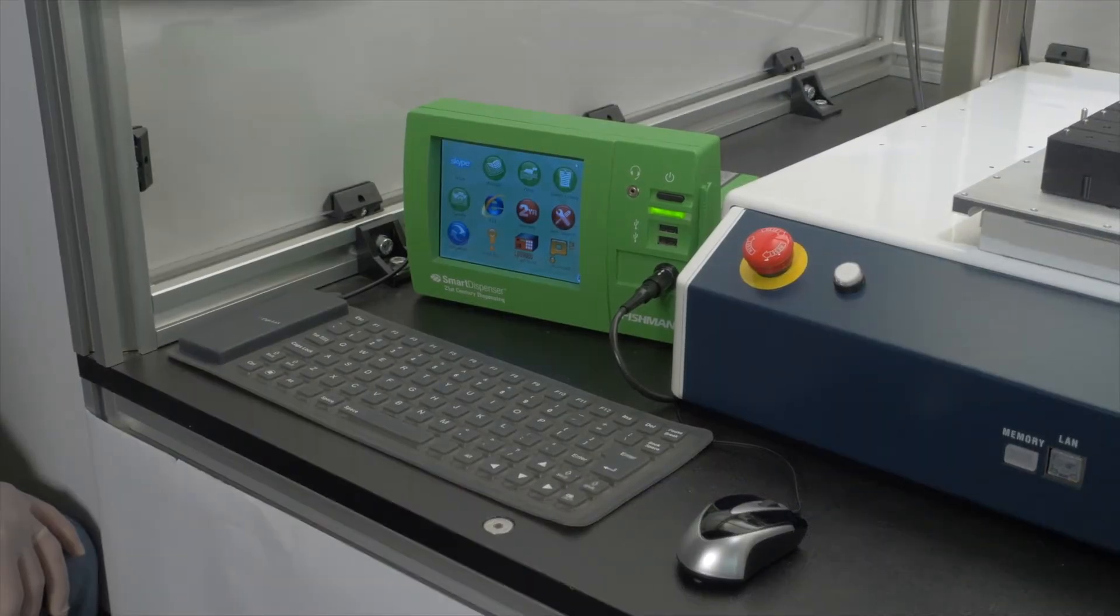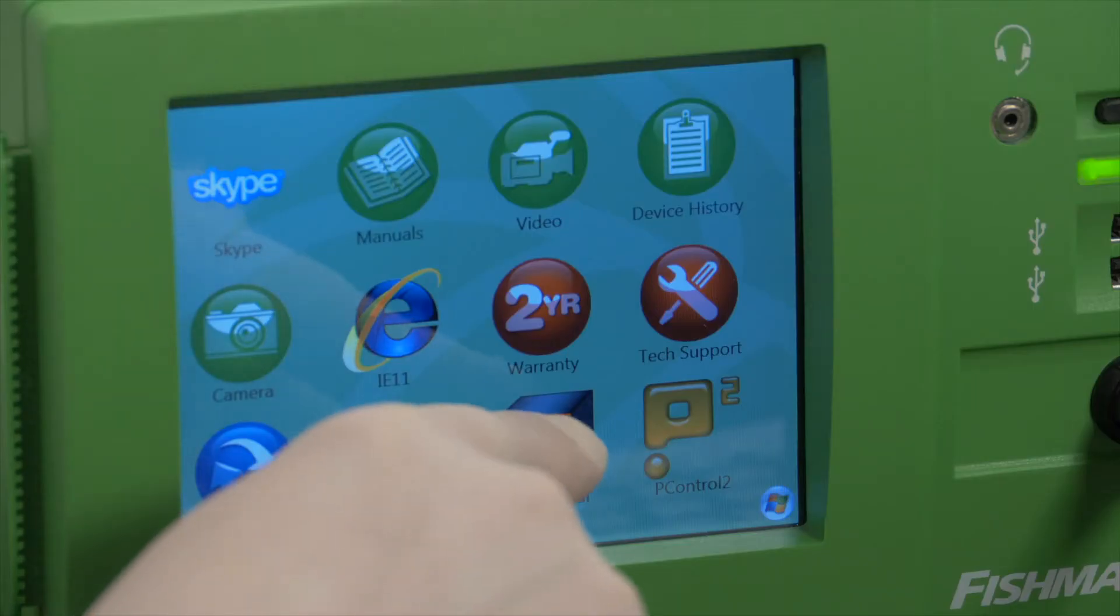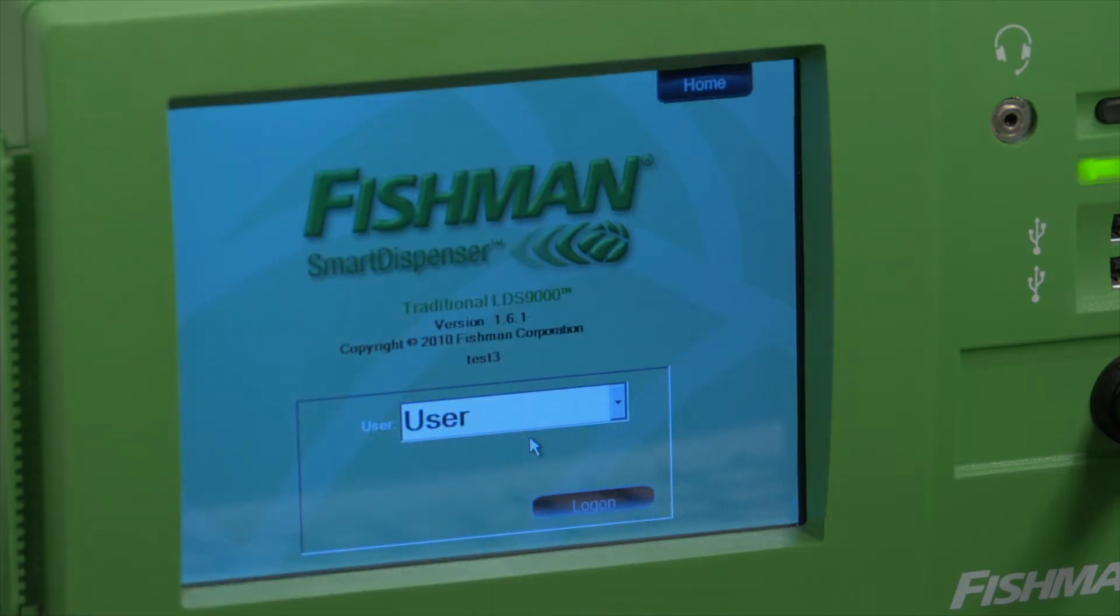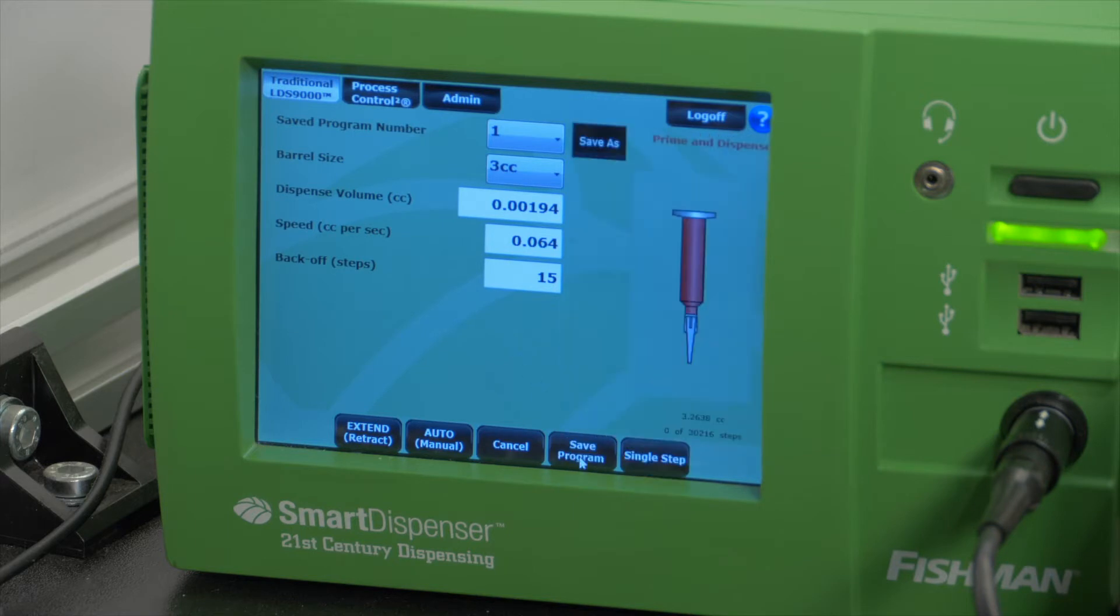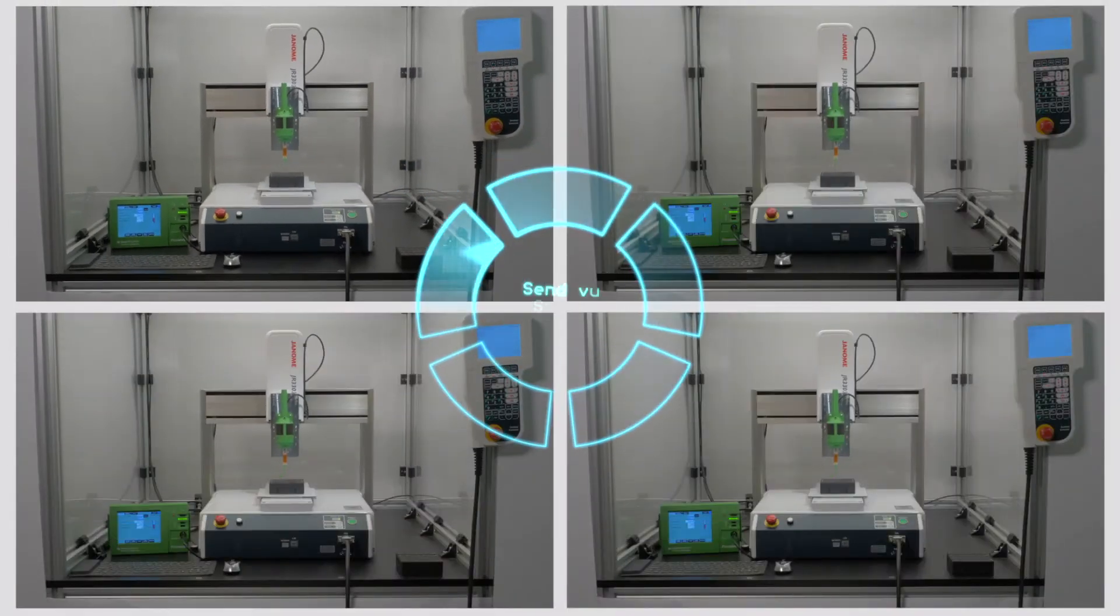How does it work? The Smart Dispenser firmware allows the operator to numerically set the fluid dispense program. Once set, it is exactly duplicated on every Smart Dispenser in an assembly line.